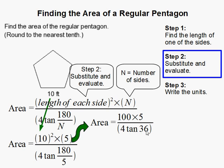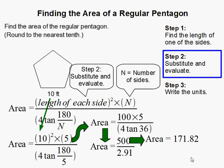Alright, so 10 squared becomes 100 times 5, and down here I just converted the 180 over 5 into 36. Then the numerator becomes 500, the denominator becomes 2.91. And when you simplify that, you get 171.82.